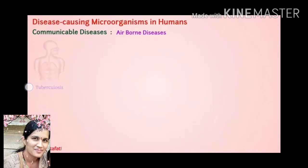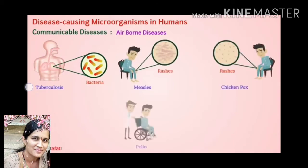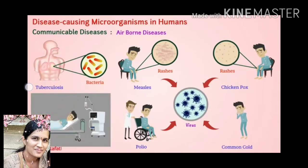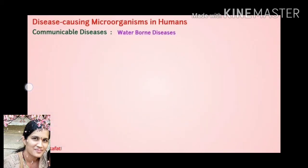More diseases which are communicable by air include tuberculosis, measles, chicken pox and polio. These are caused by microorganisms like bacteria and viruses and cause infection to healthy persons. Preventive measures: keep the patient in complete isolation, keep the personal belongings of a patient away from those of others, and vaccination should be given at a suitable age.